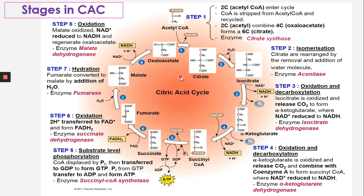One cycle of CAC is now complete for one molecule of acetyl-CoA. Since we have two molecules of acetyl-CoA — from two pyruvates produced in glycolysis — another acetyl-CoA runs through CAC again, completing the full breakdown of one glucose. Therefore, all intermediate products and final products must be multiplied by two.